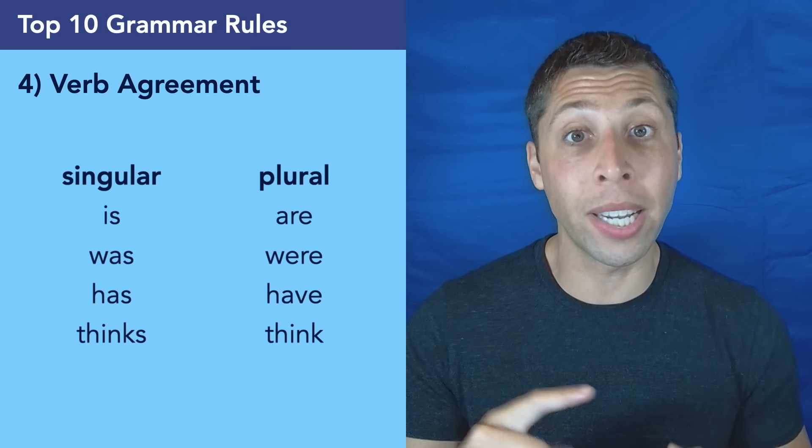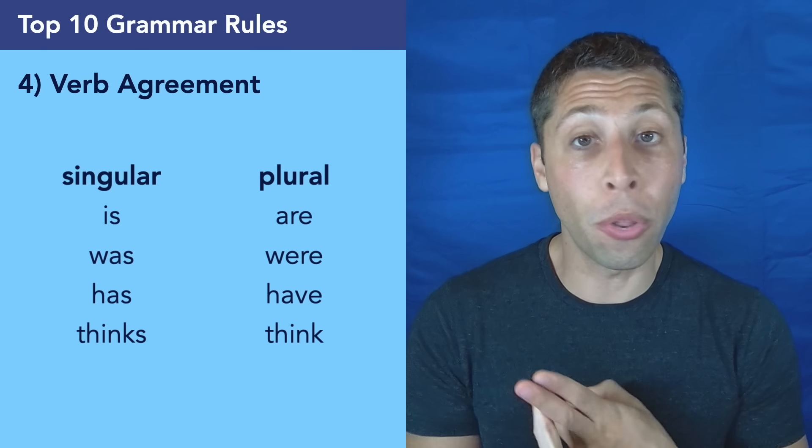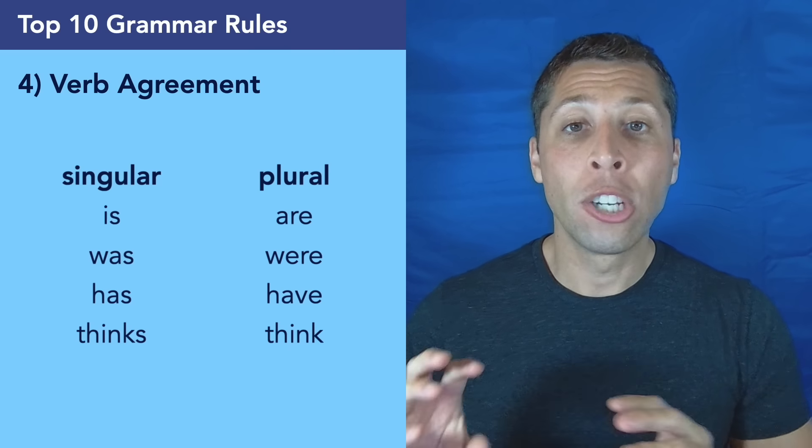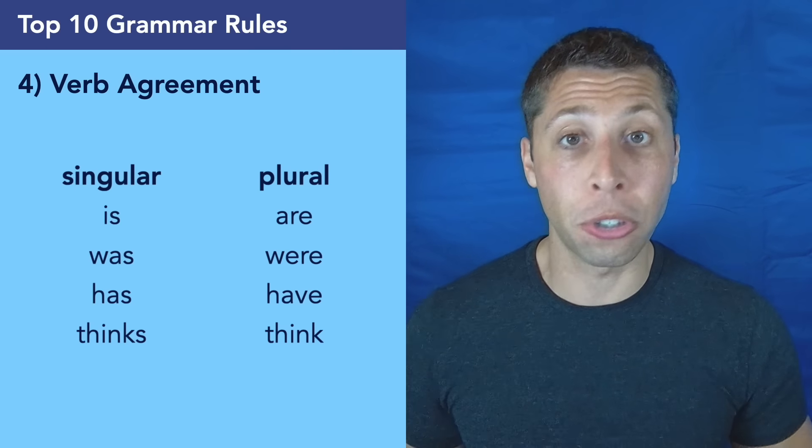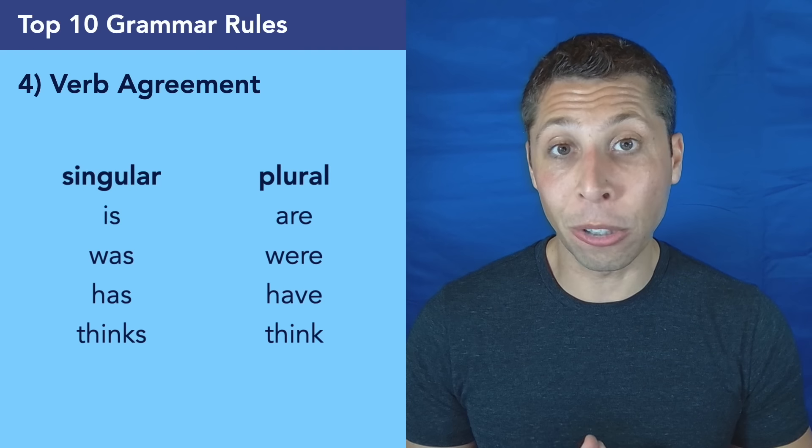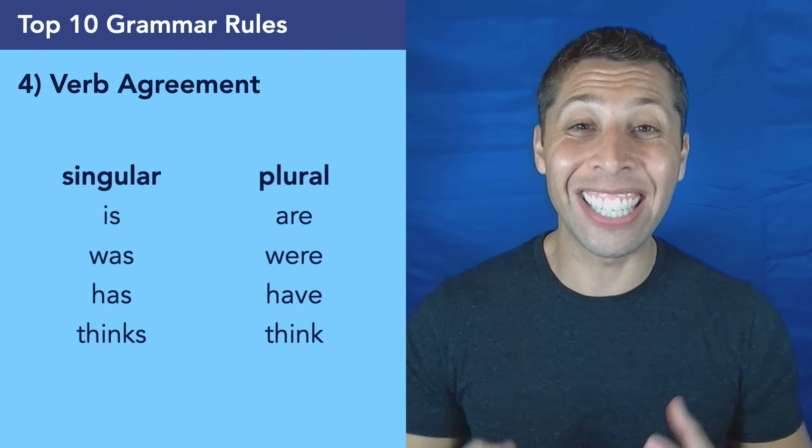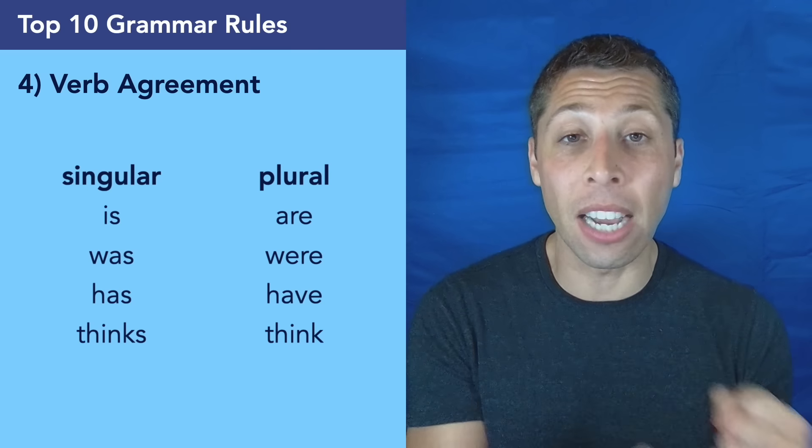So when we see these kinds of choices, our brain is going to be like, oh, do I need the is, the present tense, or the was, the past tense? But that's not always what matters. Instead, try to think about singulars and plurals similar to the way we did with pronouns. Singular verbs usually end in S and we need to use those verbs when we have a singular subject. The subject is the thing that does the verb. And so we need plural verbs when we have a plural subject.